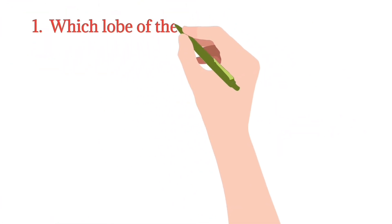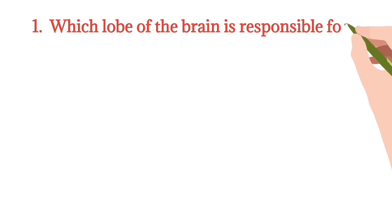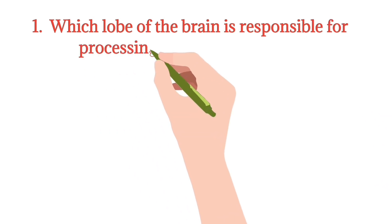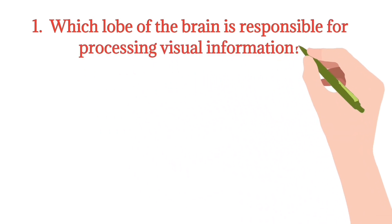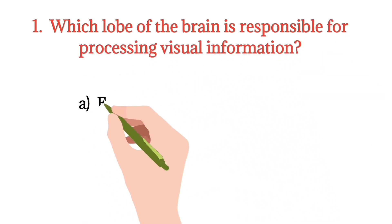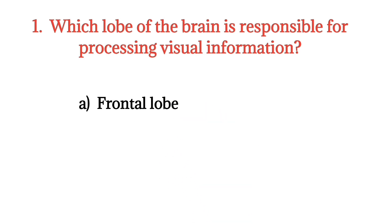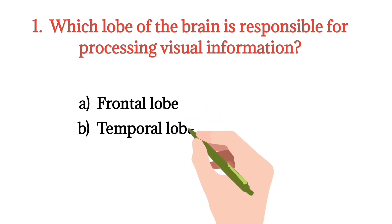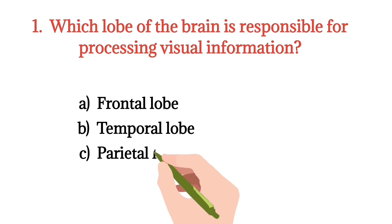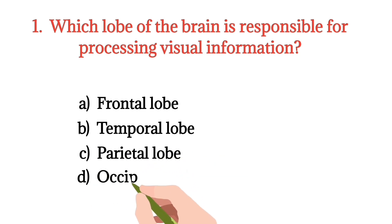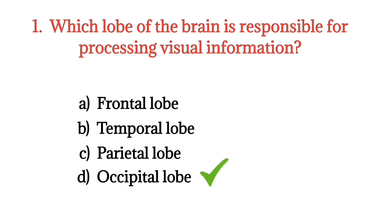MCQ number 1. Which lobe of the brain is responsible for processing visual information? Option A: Frontal lobe. Option B: Temporal lobe. Option C: Parietal lobe. Option D: Occipital lobe. The right option is Option D.